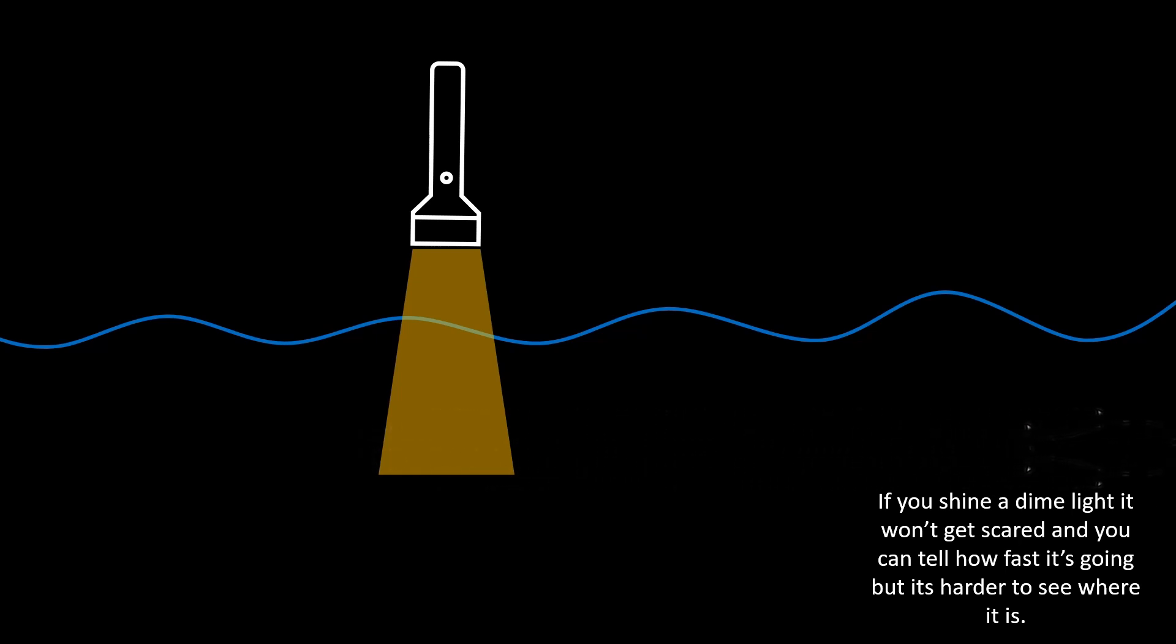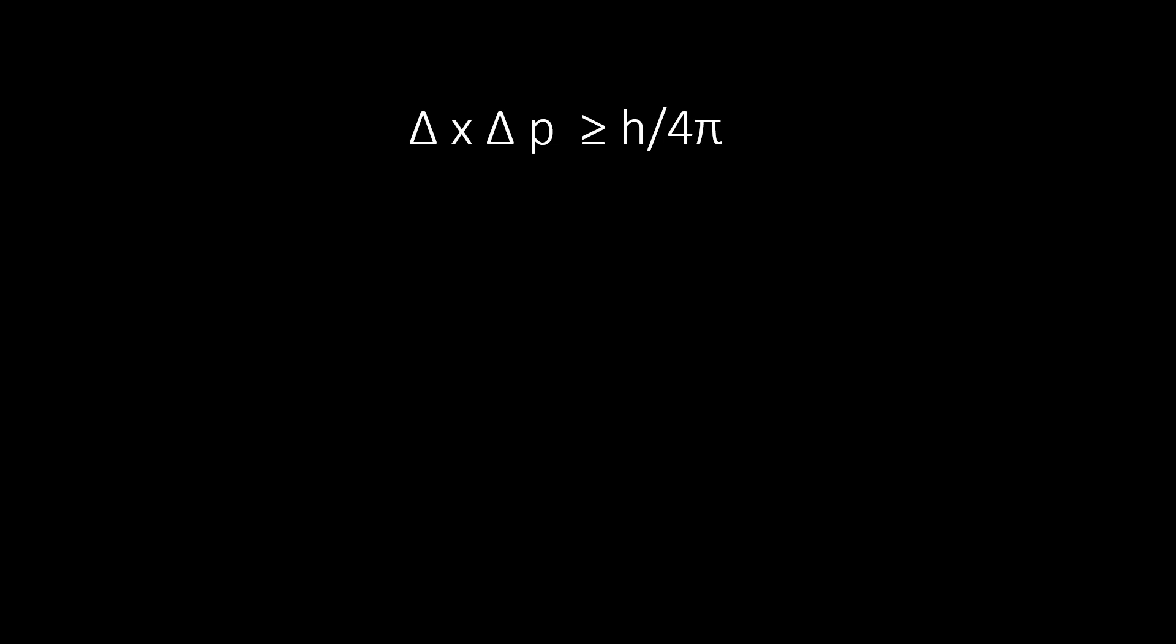And this trade-off basically mirrors what Heisenberg's uncertainty principle is about, where the more precisely you measure one aspect of a particle like its position, the less precisely you know another aspect like its momentum.